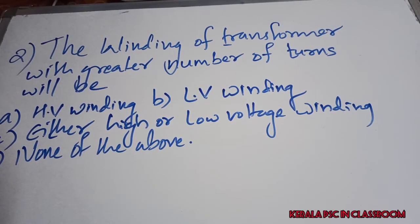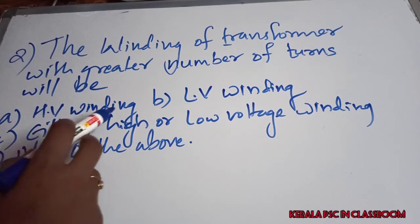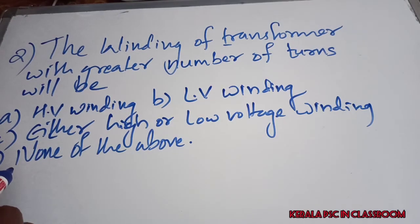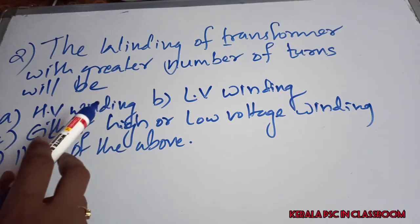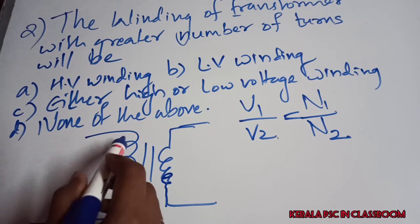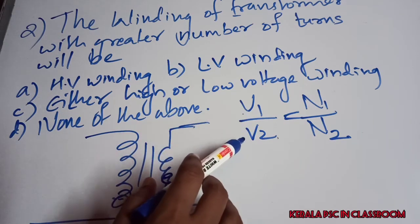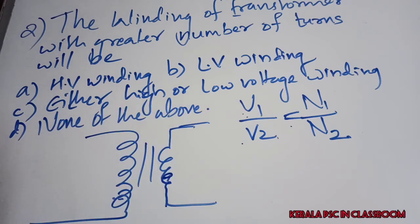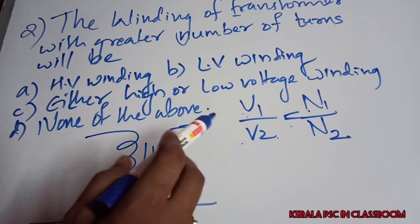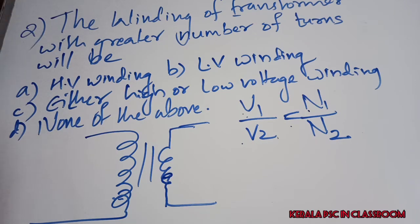Second question: the winding of a transformer with a greater number of turns will be — (A) high voltage winding, (B) low voltage winding, (C) either high or low voltage winding, (D) none of the above. The answer is (A) high voltage winding. Because V1/V2 = N1/N2, voltage is directly proportional to the number of turns, so more turns means higher voltage.